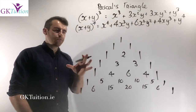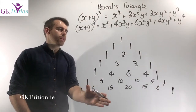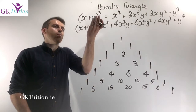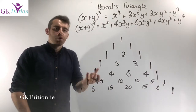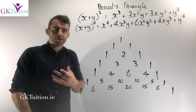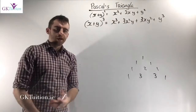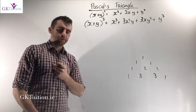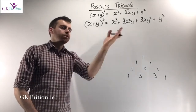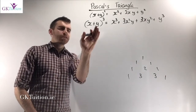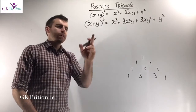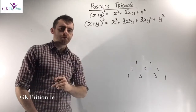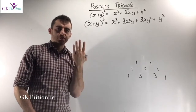Now let's consider how we can use this to work out the likes of x plus y to the power of 3, or x plus y to the power of 4, or 10, or 20, or whatever it is. Let's start with x plus y to the power of 3. If you have two terms in brackets to the power of 3, that means there are four terms. If you have two terms in brackets to the power of 2, that means there are three terms. Basically, you just add 1 to the power to get the number of terms.